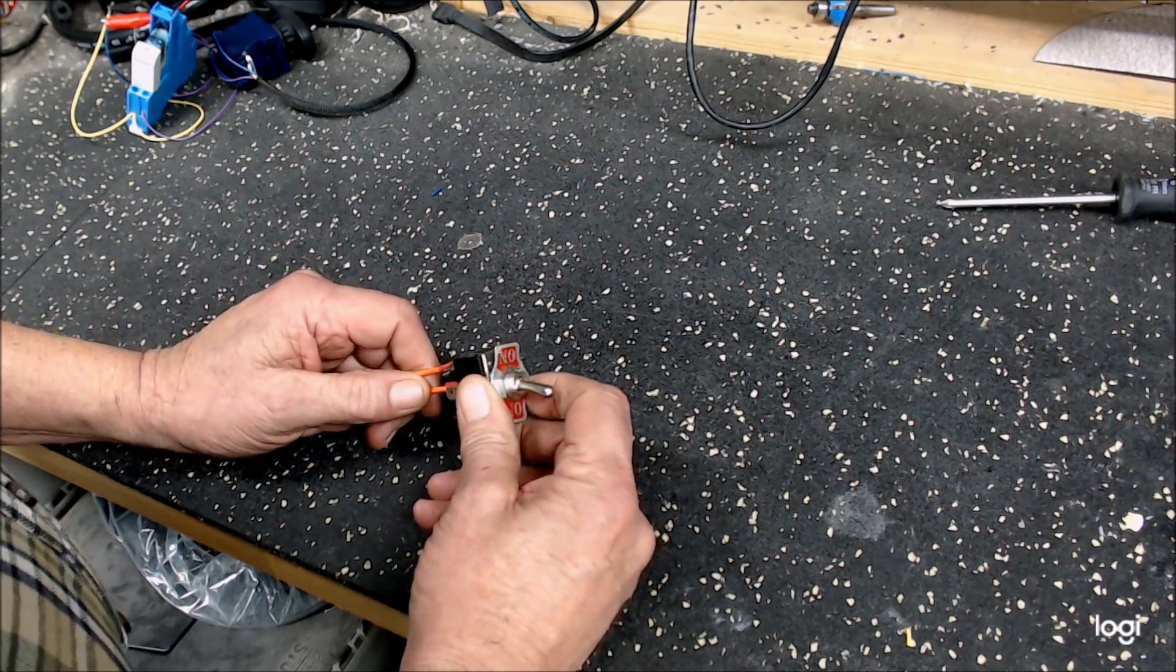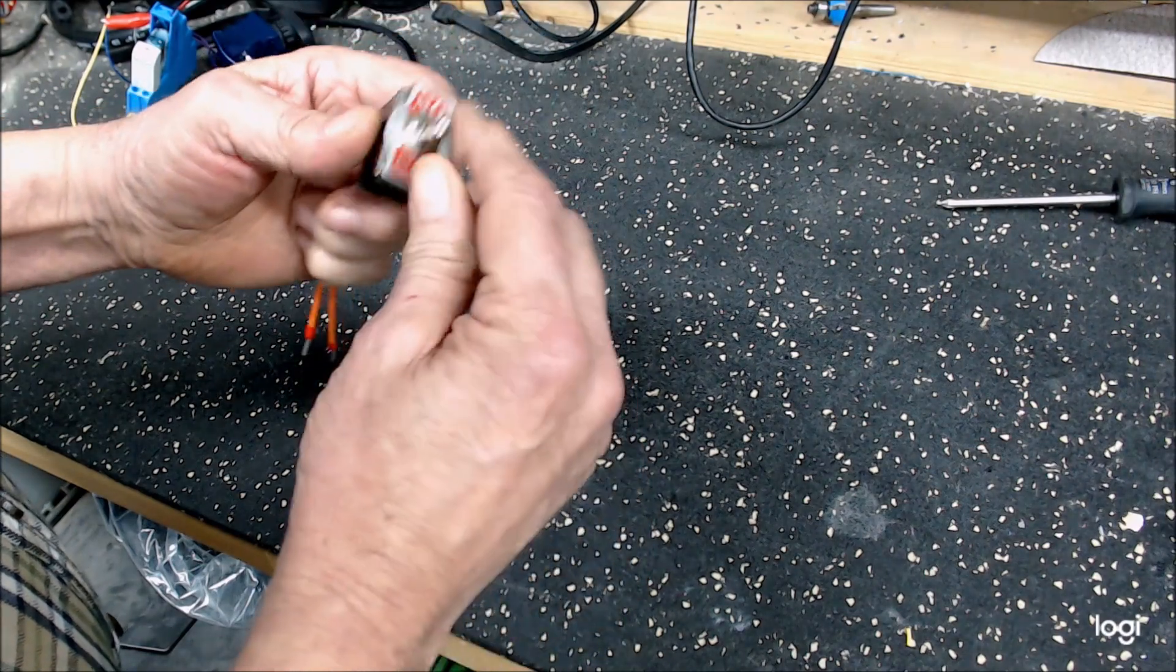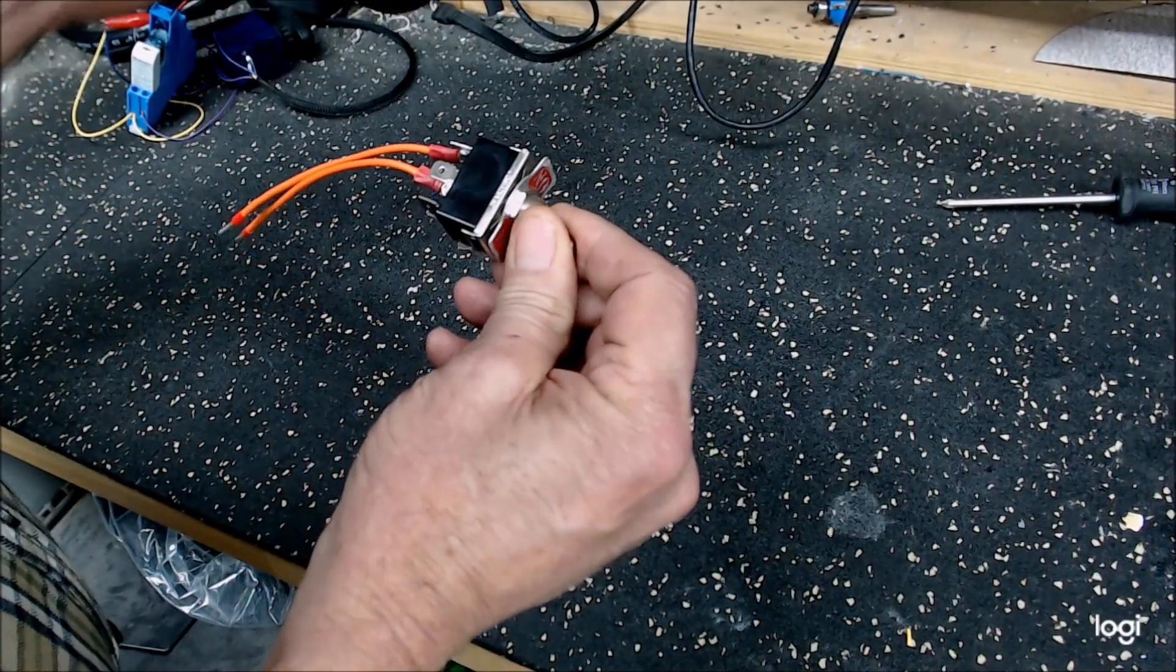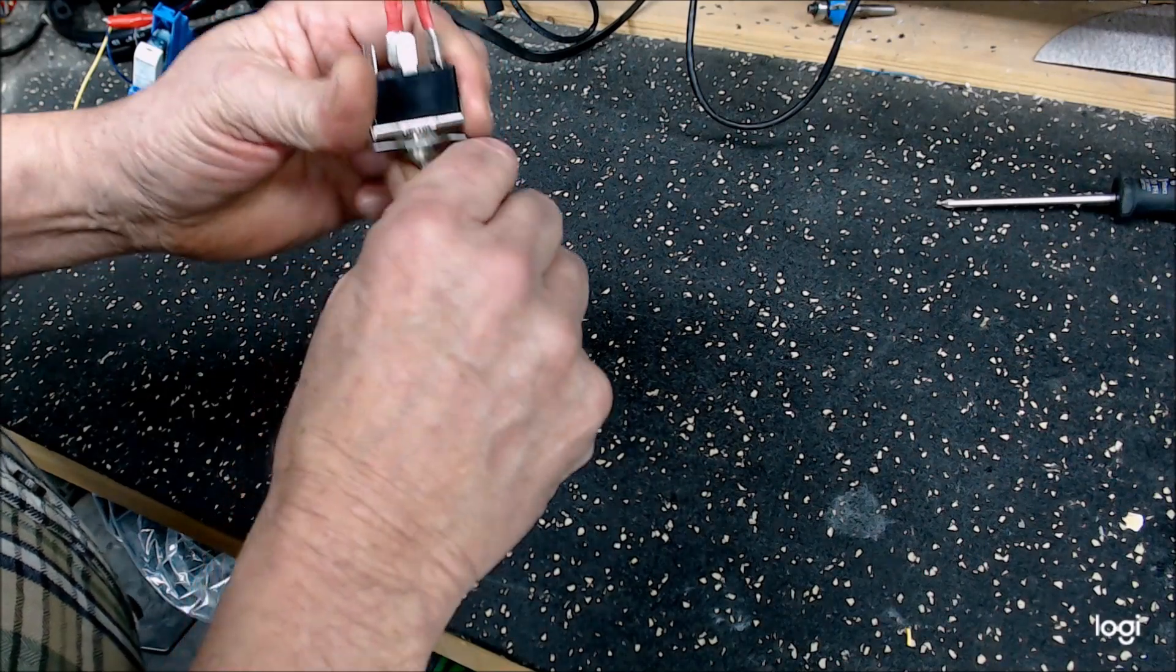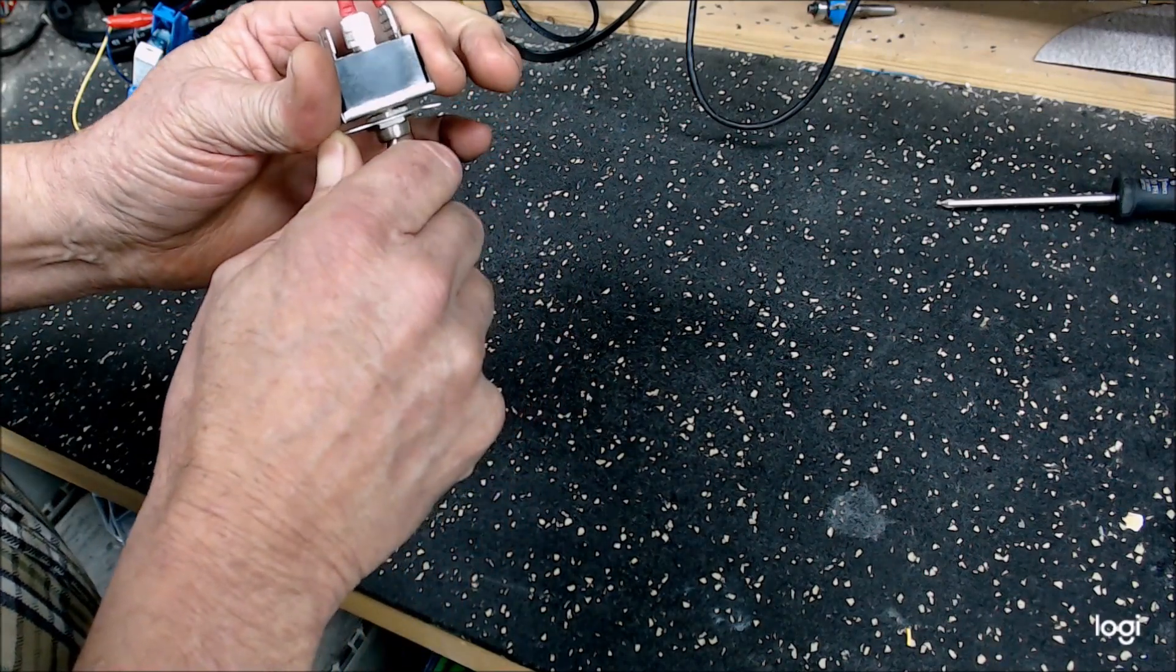Basically, all we're talking about is a switch. Here it is - single pole double, I mean double pole double throw switch. We're going to do the same thing with automation type parts rather than automotive.